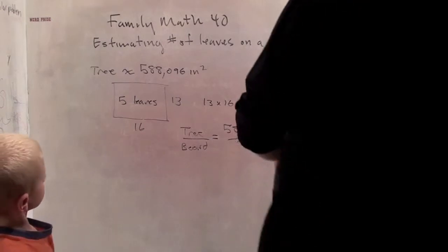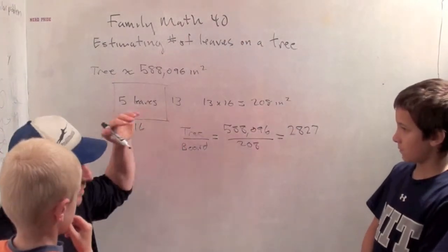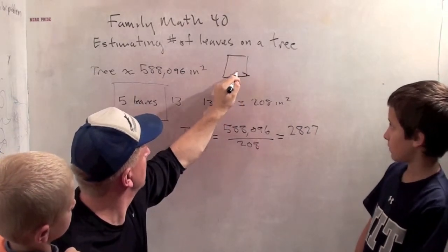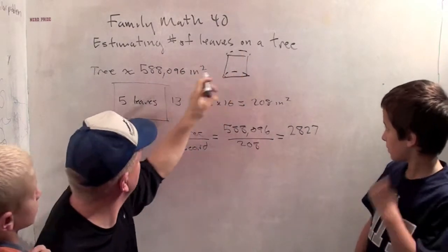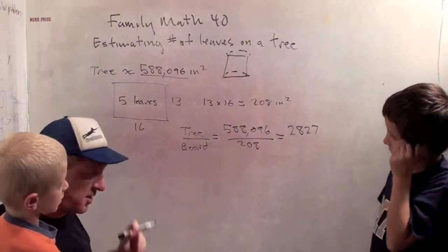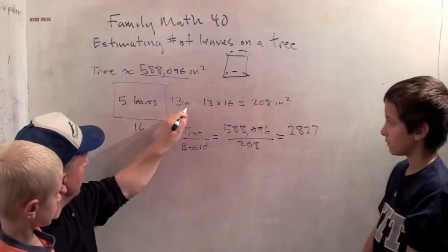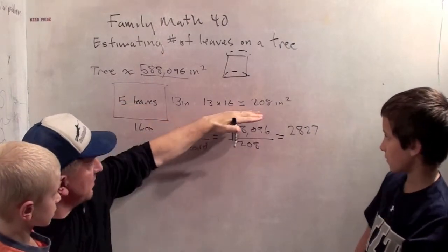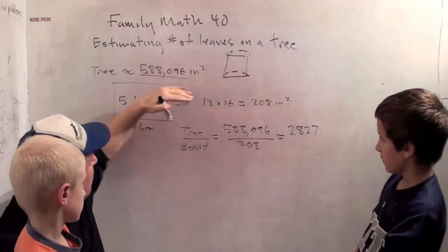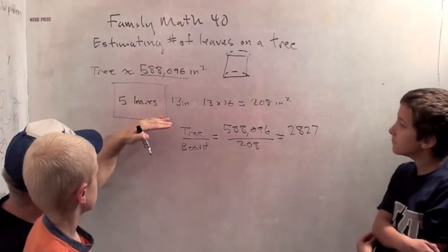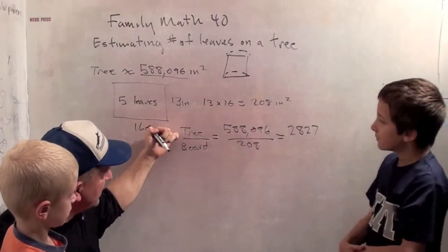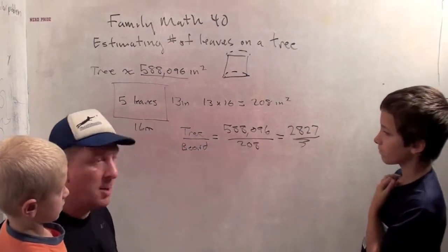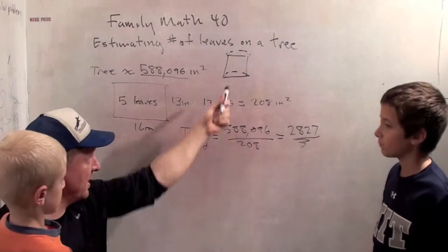Okay, we're back. We had to multiply our square foot by 144 and we found the tree, if we pretend the tree is a cylinder, the outside of the cylinder has an area of about 588,096 because we had to multiply by 144. Now we had our little cutting board that was 13 inches by 16 inches and that took about 5 leaves. And so 13 times 16 is 208 square inches. So our tree is about 588,000 square inches and our board is 208 square inches. So we take the tree divided by the board which is 588,000 divided by 208 and we get about 2827 boards to make the outside of that tree pretending it's a cylinder.